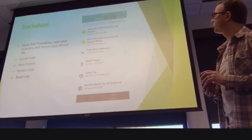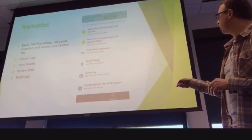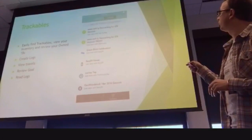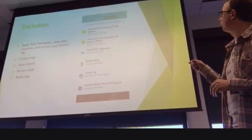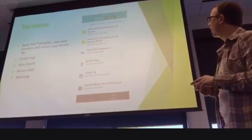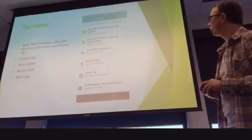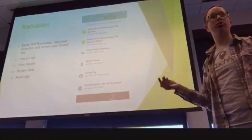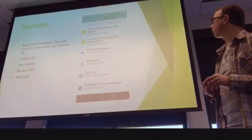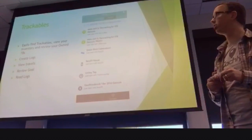Let's talk about trackables. You can easily find trackables by searching for the TB code. You can see your inventory or what you own, create logs specifically for a particular trackable, view their travels on the map, and see the goal of the trackable. There are some great options there that do not exist in much depth with the official app.